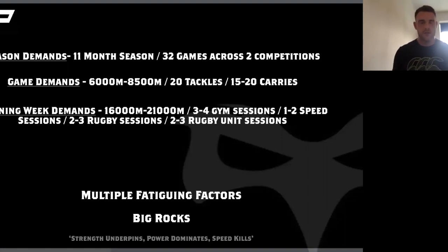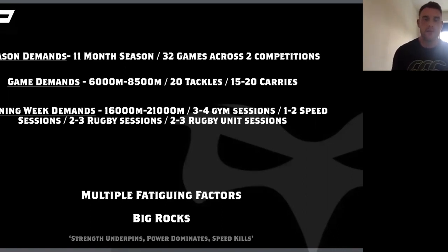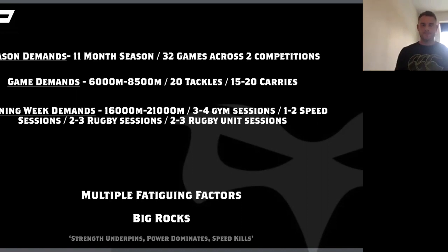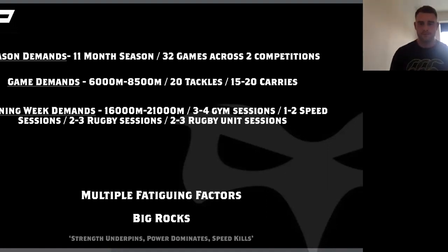Even with our training week demands, players need to be robust enough to back up training weeks. We'll get through between 16 to 21k running weeks, with three to four gym sessions, two to three speed sessions, rugby sessions, and unit sessions. Unit sessions mean our forwards — tight heads, loose heads, hookers, second rows, and back rowers — have separate scrum and lineout sessions on top of the rugby. As you can see, there are multiple fatigue factors within our program, plus analysis outside of training and general life factors, so we need to be really clinical with our programming.